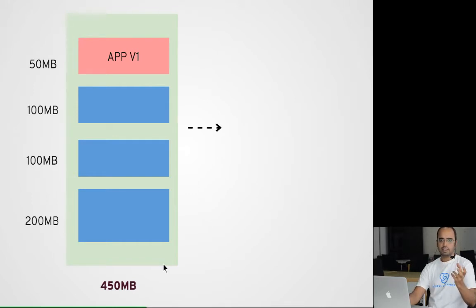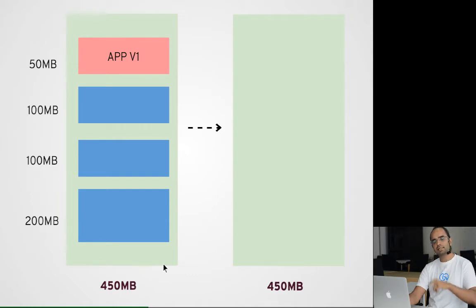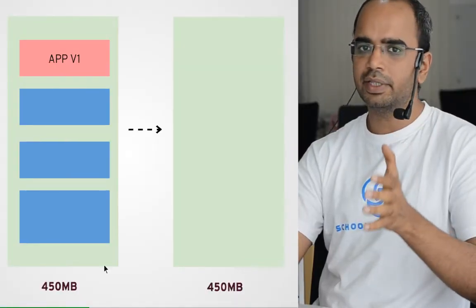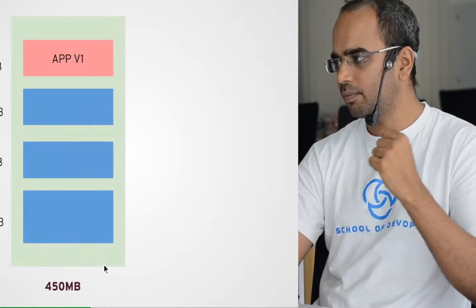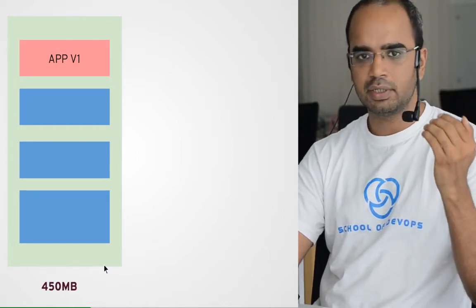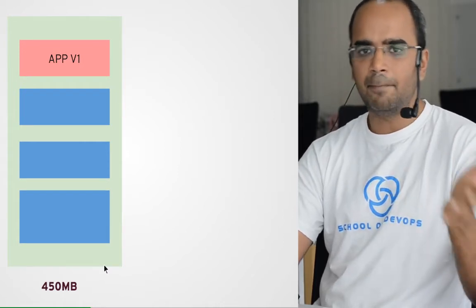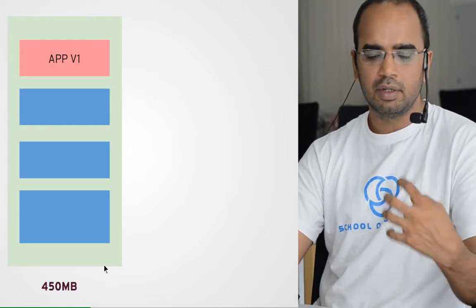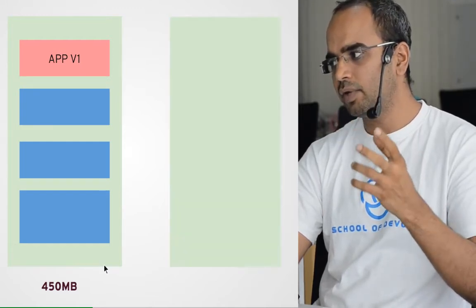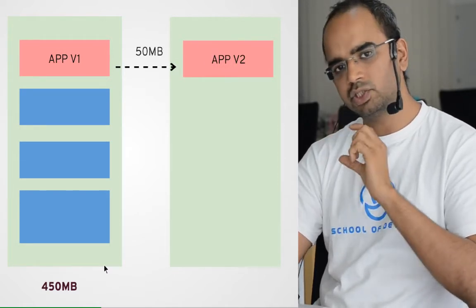Now let's assume we upgrade our application from v1 to v2. Even though the changes made are maybe just 50 MB in the application layer, we have to rebuild the complete image — 450 MB in this example. That happens even if you change a single file in that VM. Every time you make a change, you transfer 450 MB. With Docker, even though the image can also be 450 MB — comparable to a VM — when you transfer it, since you've only changed one component, one layer, you're not transferring 450 MB.